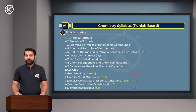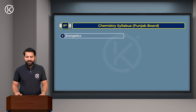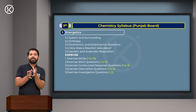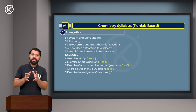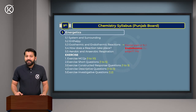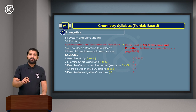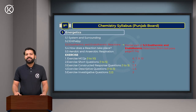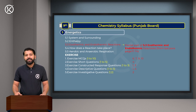Chapter 5 is Energetics. In this chapter, you will study the energy changes that occur during chemical reactions. Reactions may be exothermic, releasing energy, or endothermic, absorbing energy - affecting whether the surroundings are warmed or cooled. The excluded portion is a partial section of Topic 5.3 - Exothermic and Endothermic Reactions, specifically pages 71 to 74. Excluded questions: MCQs 6, 7, 9, and 10; Short Question 4; Constructive Response Questions 1 and 3; Descriptive Questions 1 and 4; and Investigative Question 2.